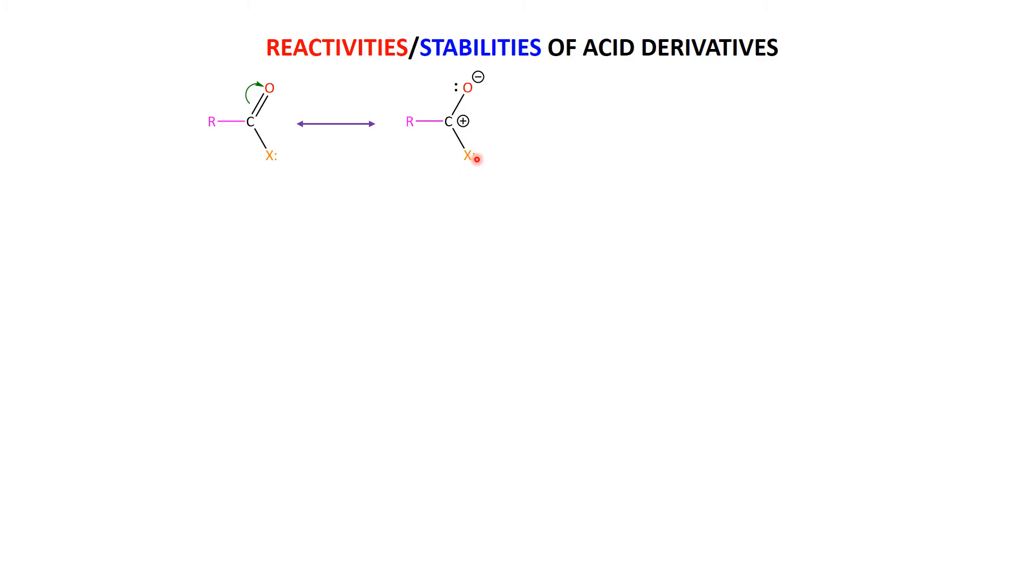Can this lone pair of electrons on X, if it's in a p orbital, have that p orbital overlap with the p orbital on this carbon so that those electrons move into a double bond there? So what we're going to be discussing is how feasible is this whole process.